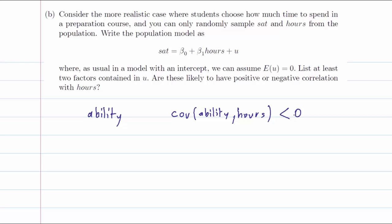Another factor that could be correlated with the number of hours is family income. If you have more money, you will probably like to spend it on this preparation course. So more income means more hours in the preparation course. So the covariance between income and hours should be positive.